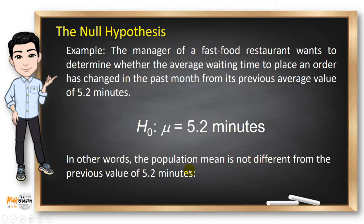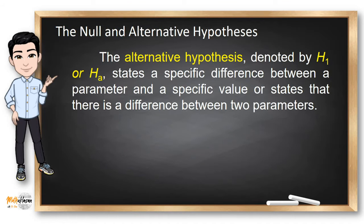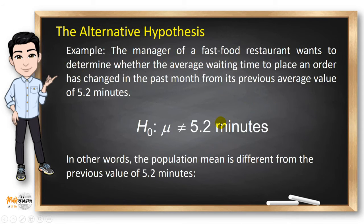In other words, the population mean is not different from the previous value of 5.2 minutes. On the other hand, the alternative hypothesis, denoted by H1, states a specific difference between a parameter and a specific value, or states that there is a difference between two parameters. In the same example, instead of saying the population mean is equal to 5.2 minutes, we say the population mean is different from the previous value of 5.2 minutes.